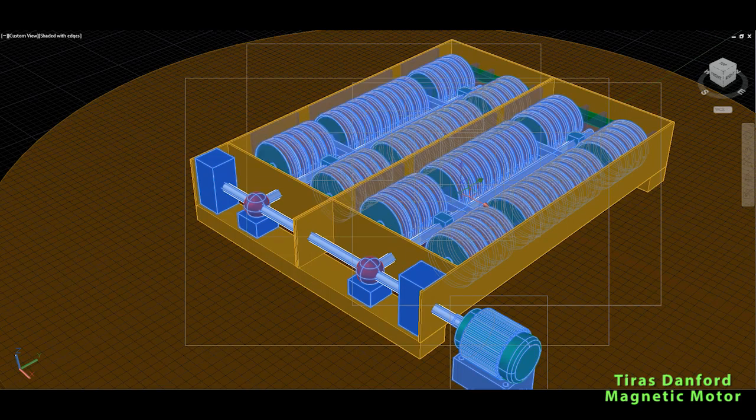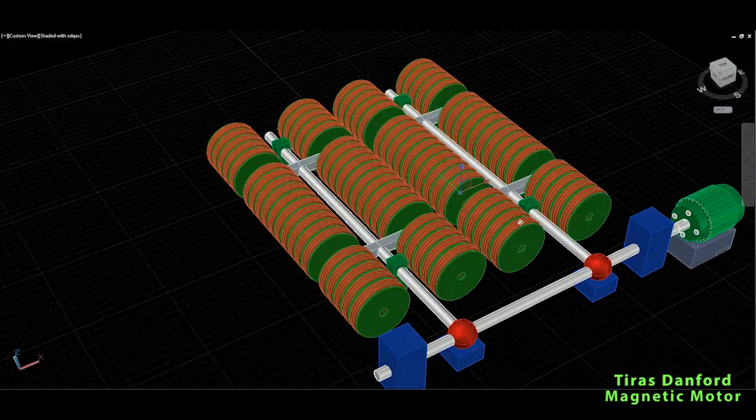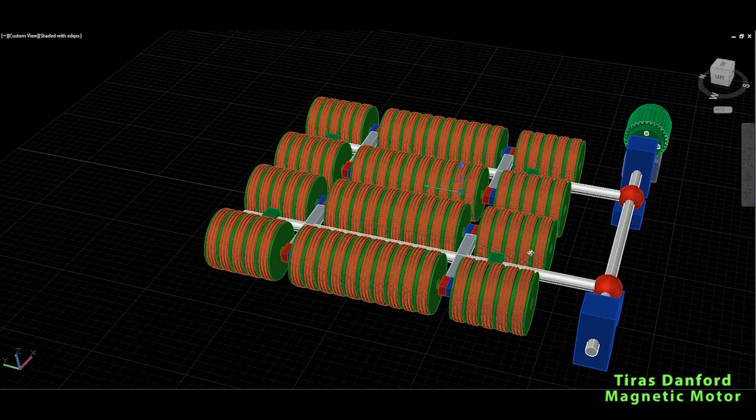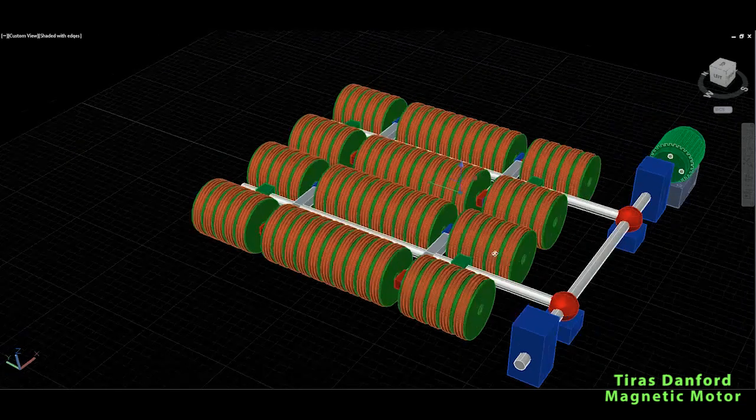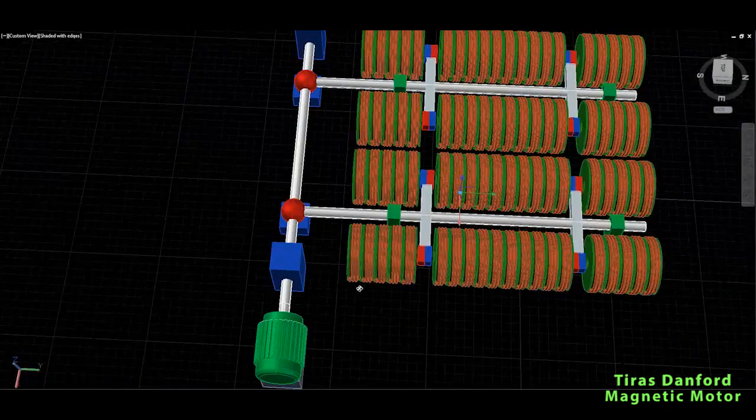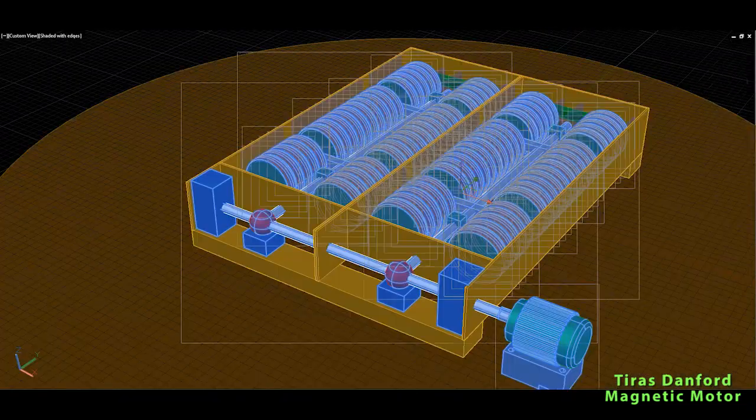And what the inventor says, that the energy provided to energize the electromagnets, these coils, is less than the energy produced by these permanent magnets, which will go left and right in reciprocating manner.